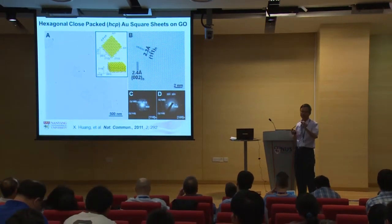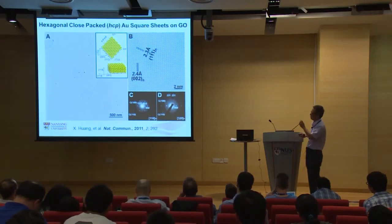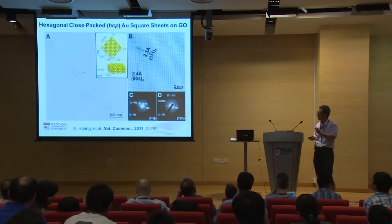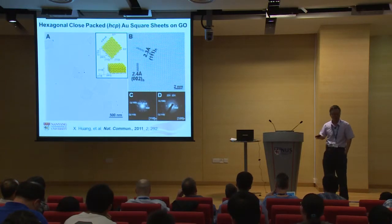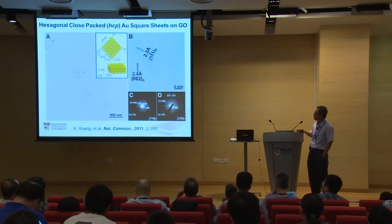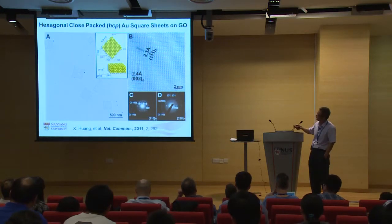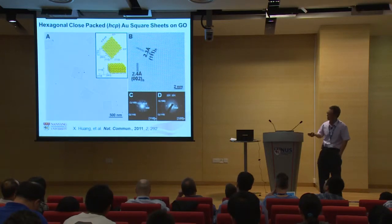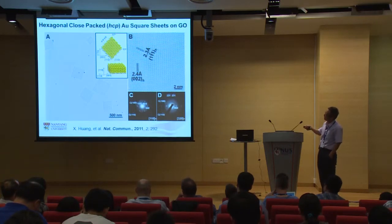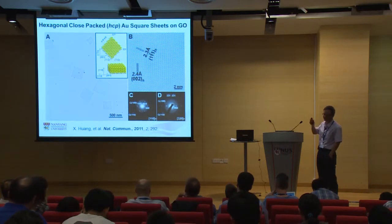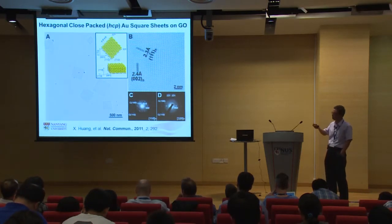After obtaining this unique HCP gold sheet, some ask about catalyst or optical properties. Unfortunately, the yield of this gold sheet is only about 10–30%, so although we have this structure, the bulk experiment still contains gold nanoparticles or wire structures. My group is now working to purify the gold square sheets and increase the yield for further applications.